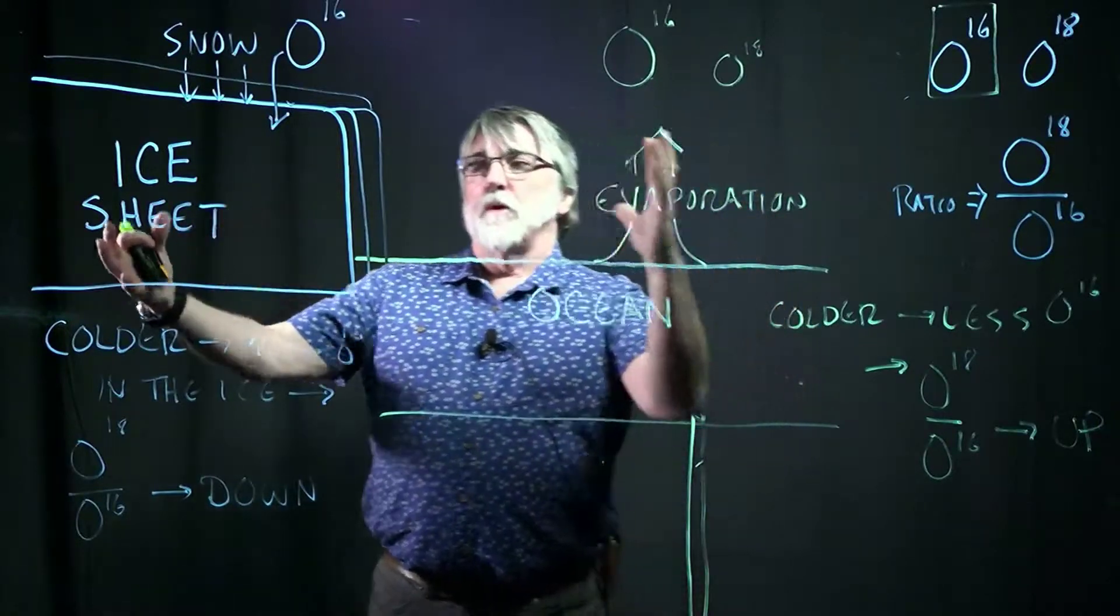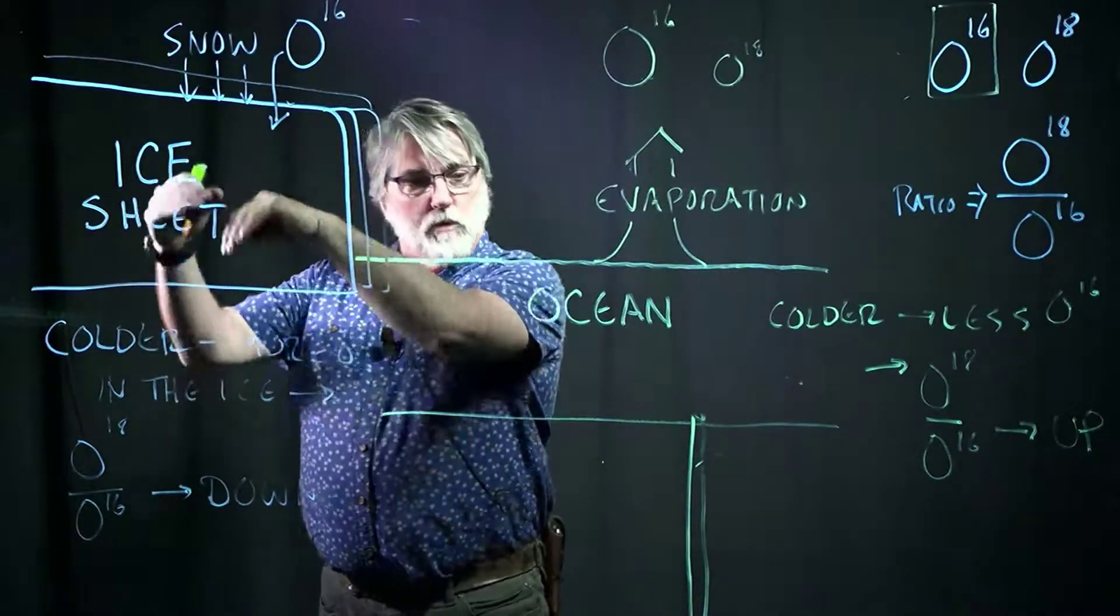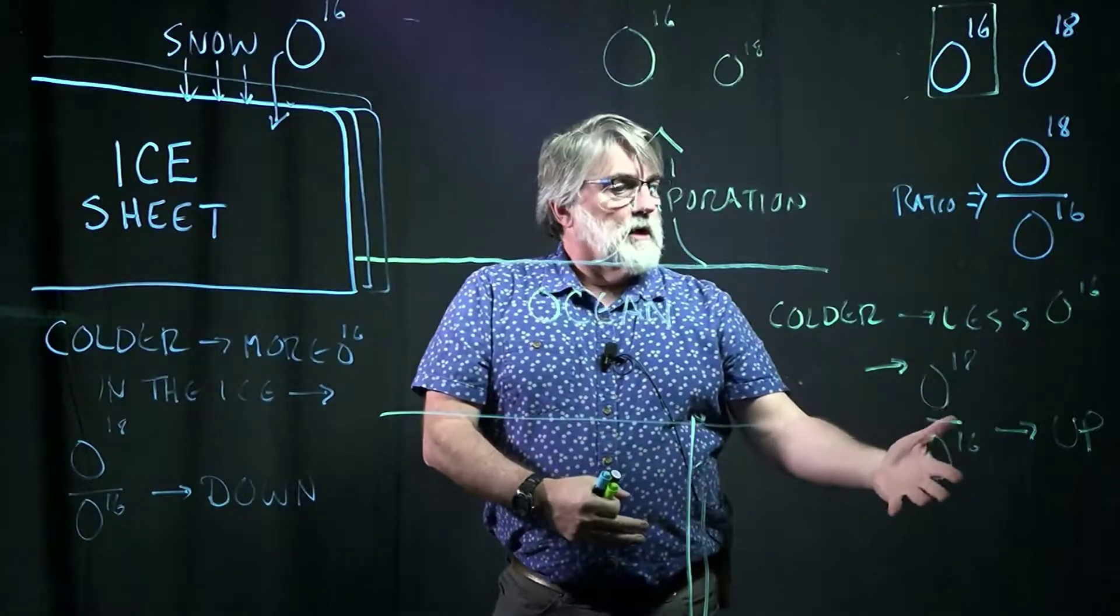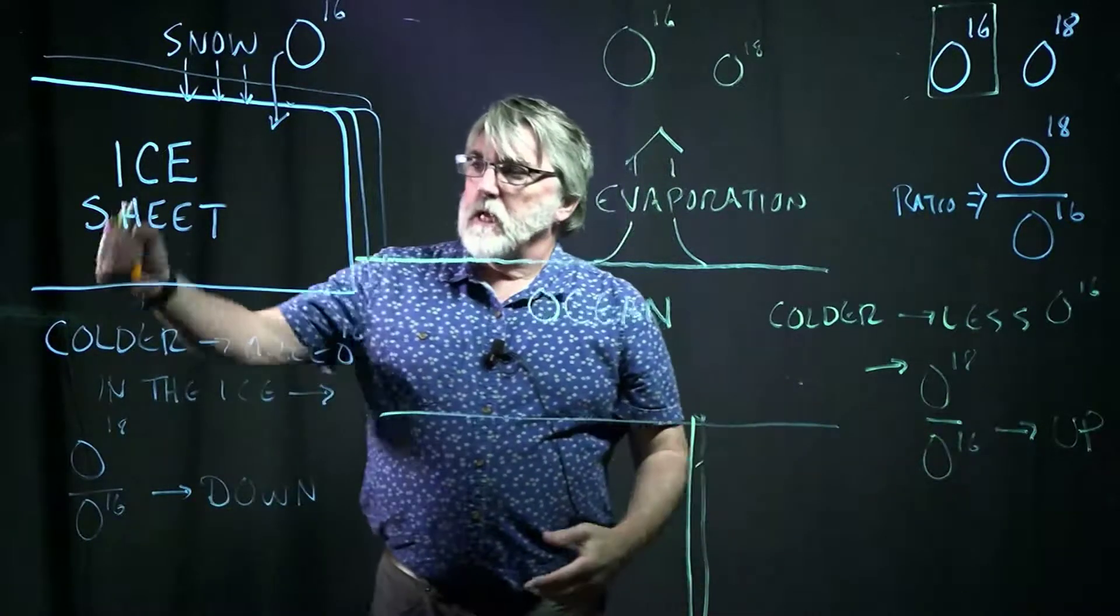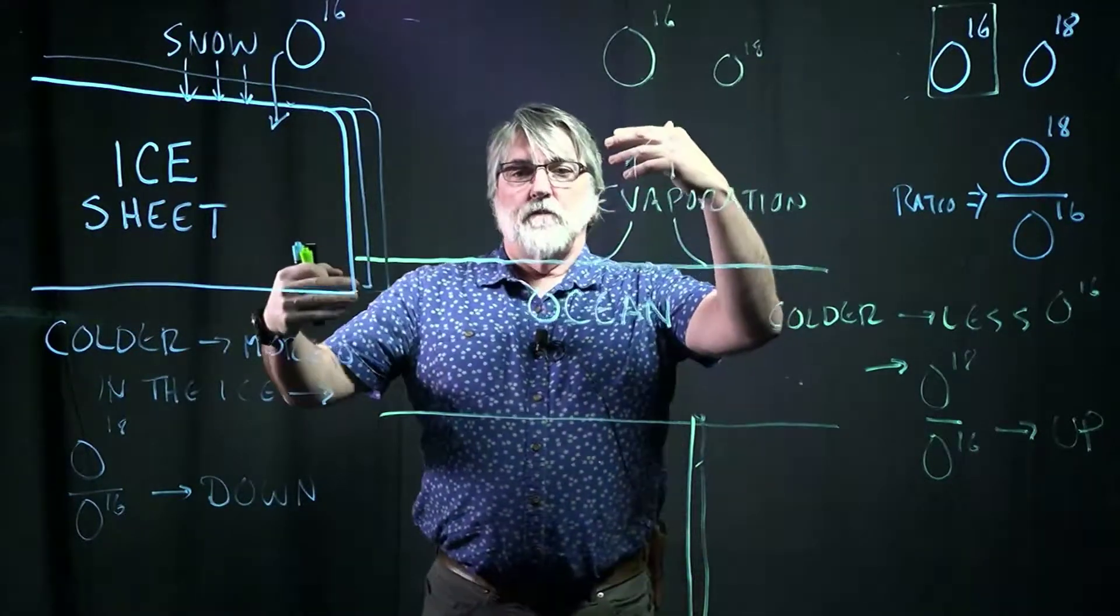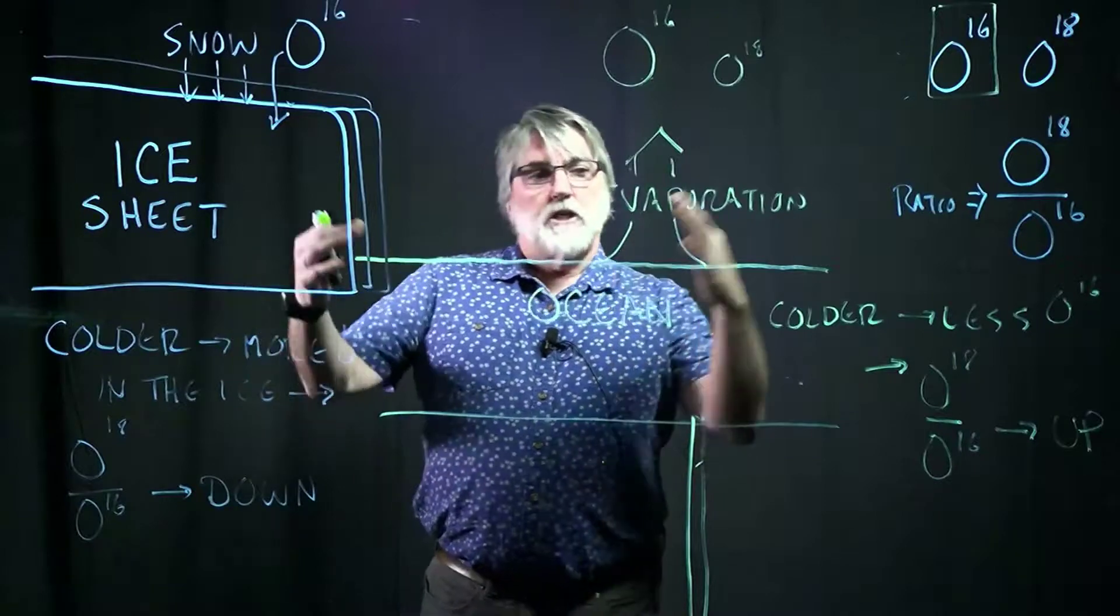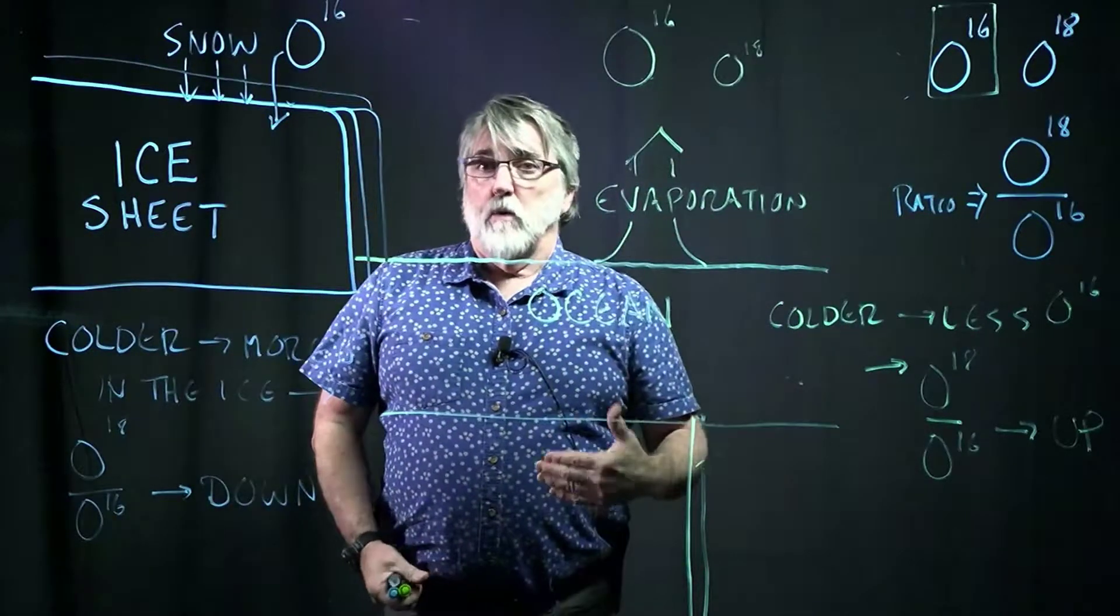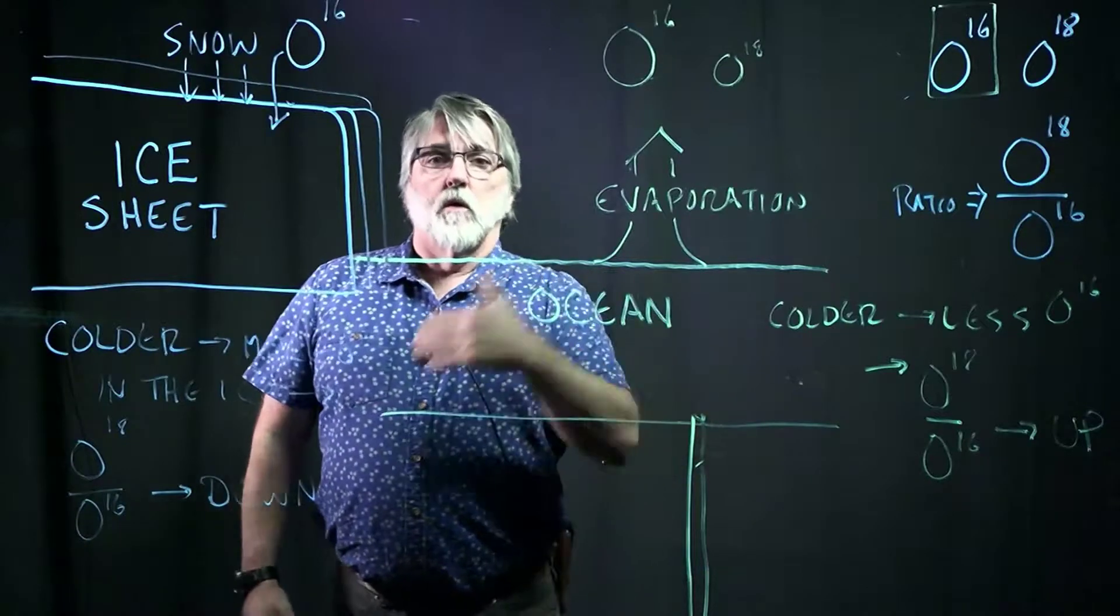And then when things melt, the opposite happens. We release more O16 back into the oceans, and that ratio goes down in the oceans and it goes up in the ice sheets. So it's actually a very useful indicator of when ice sheets are growing and shrinking, and that's allowing us to tell when climate is getting colder or warmer.